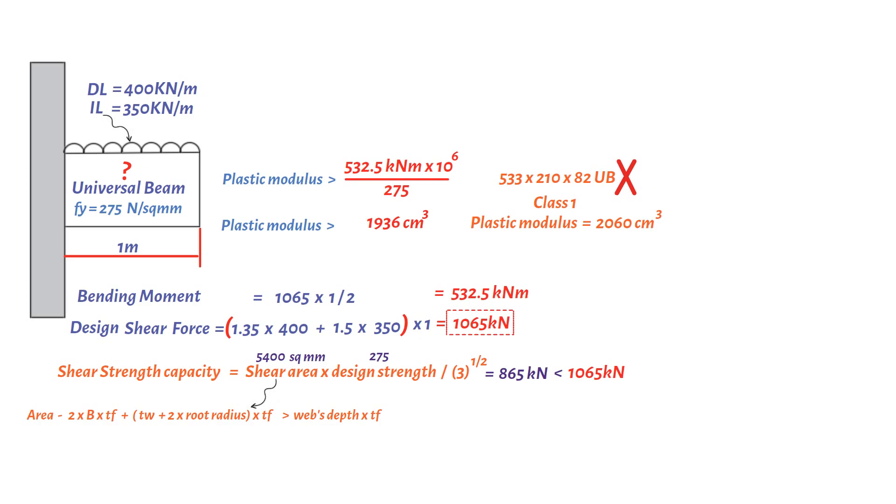Let's try a new section, 610 by 229 by 113 UB, with plastic modulus 3290 cubic centimeters, yield strength 265, and class 1.